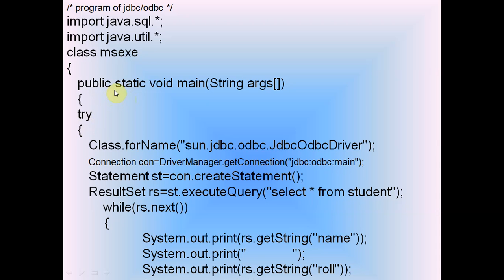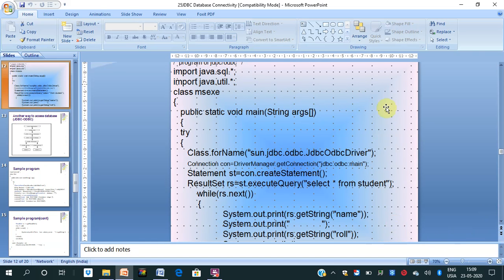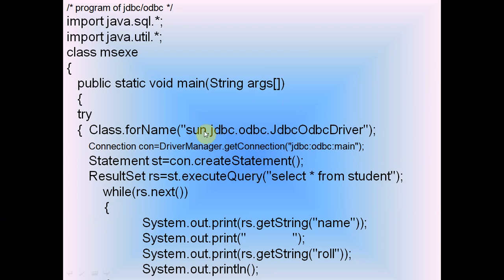Inside a try block, the first statement is Class.forName("sun.jdbc.odbc.JdbcOdbcDriver"), where sun refers to Sun Microsystems. This loads the JDBC-ODBC driver. The second statement is: Connection con = DriverManager.getConnection("jdbc:odbc:name"), where name is the DSN name.